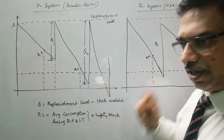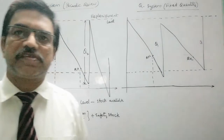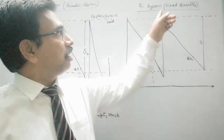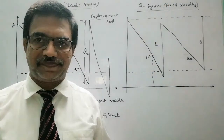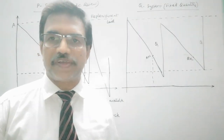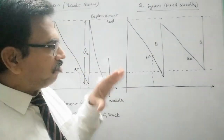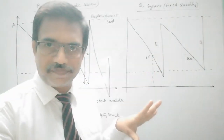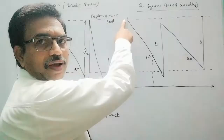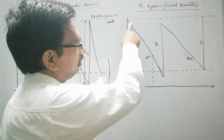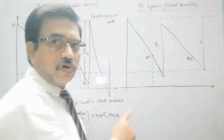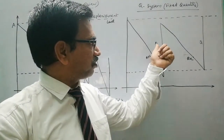Coming to the other inventory control system called Q system — here Q means the quantity is fixed, so it is a fixed quantity system, meaning the order quantity is fixed every time. We will place an order for the same quantity. Suppose we start at the maximum level of inventory for a particular commodity; it decreases at a particular rate, and this is the reorder level. Once the reorder level is reached, an order is placed for quantity Q.